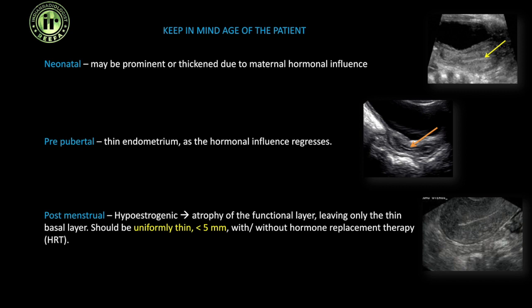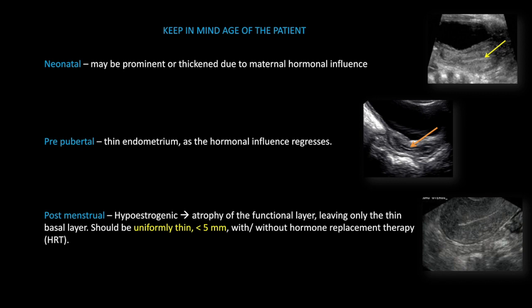In the reproductive age group, there's a lot of variation based on which phase of the menstrual cycle the patient is in. Then comes the postmenopausal age group. During this period, the estrogen hormone influence has regressed and so there's atrophy of the functional layer, leaving behind just the basal layer. We expect it to be thin and uniform, measuring less than 5 millimeters — this accounts for patients on hormone replacement therapy as well.